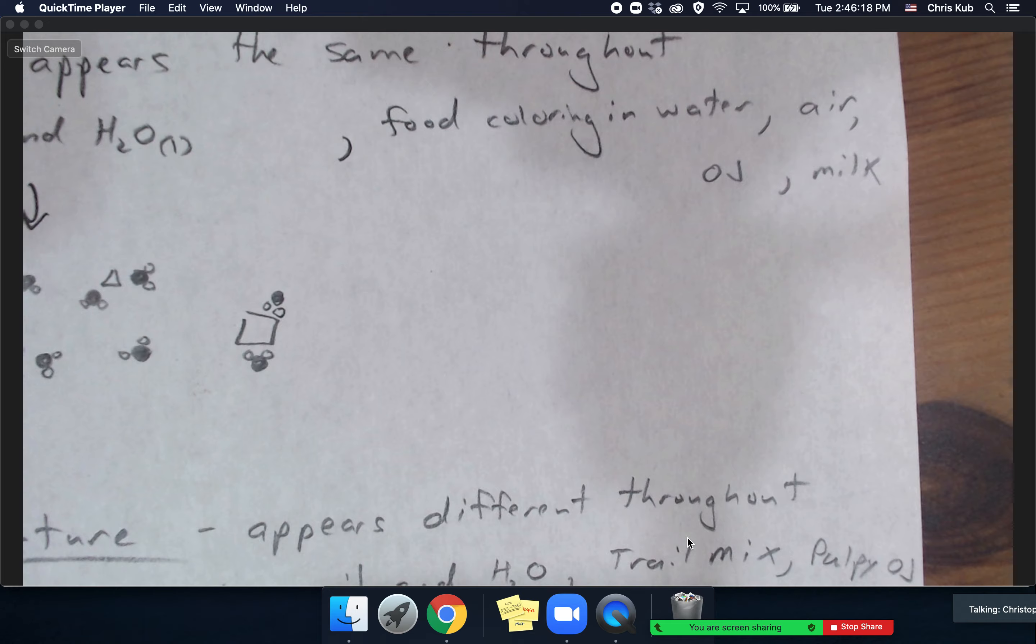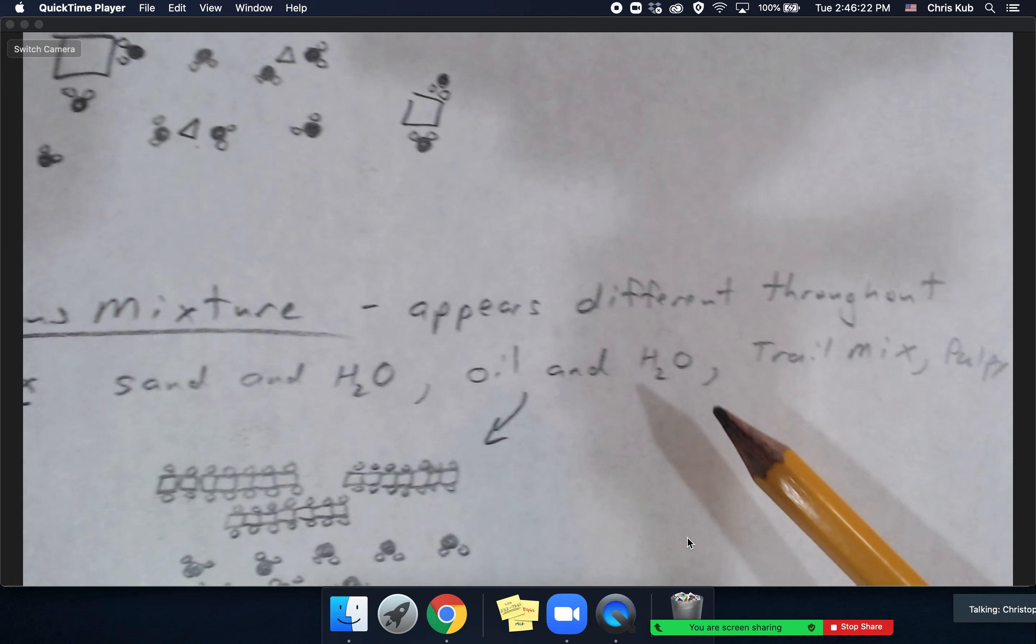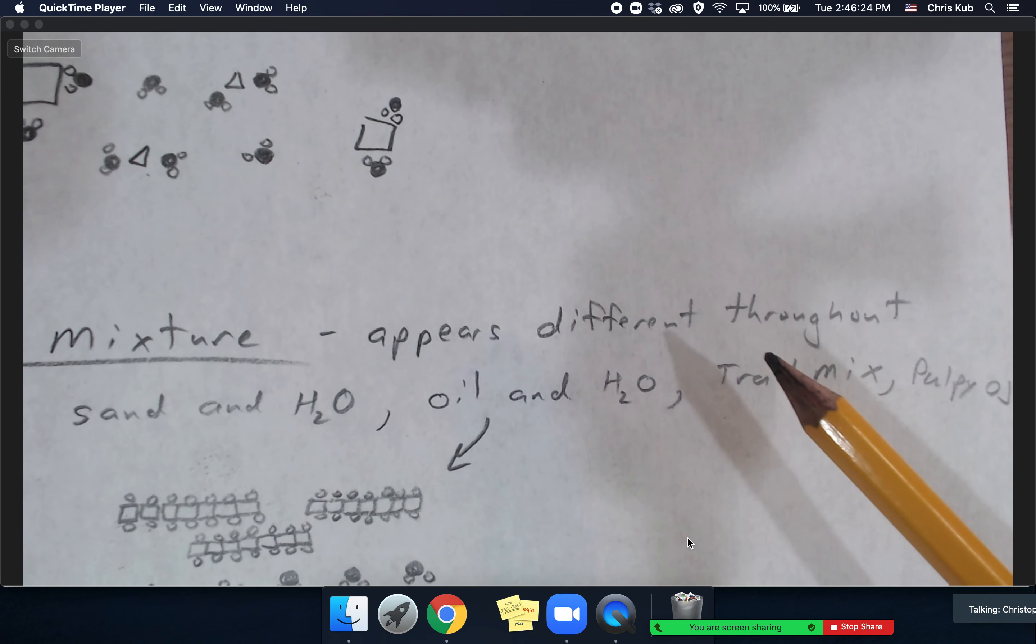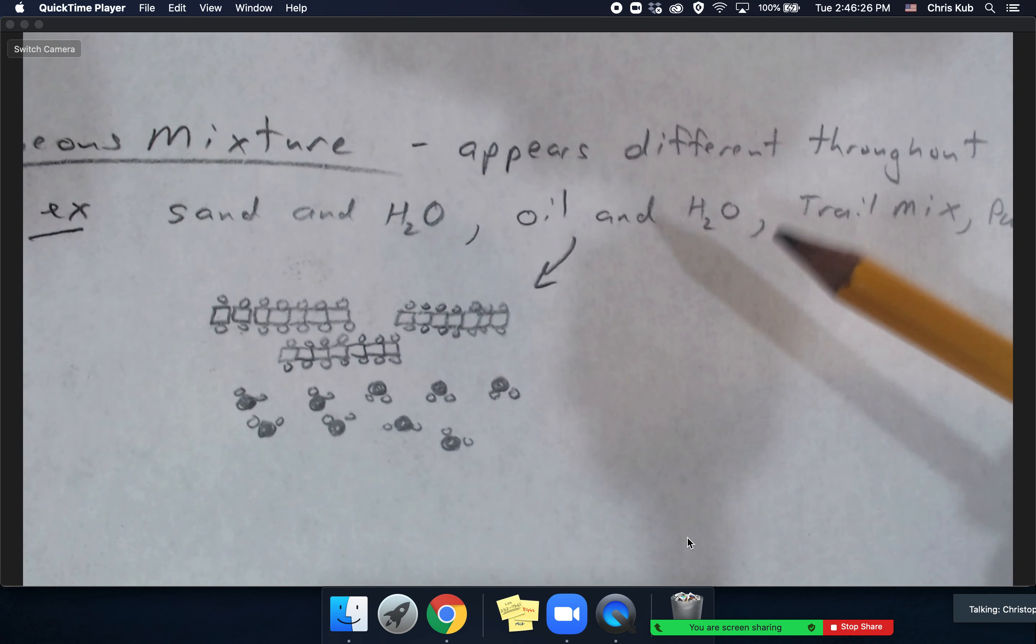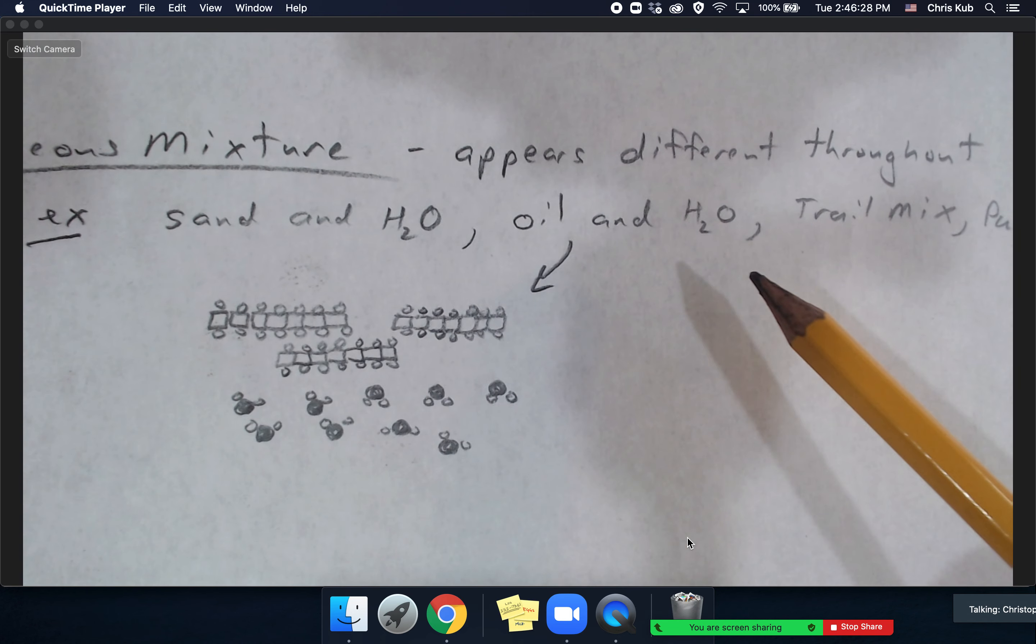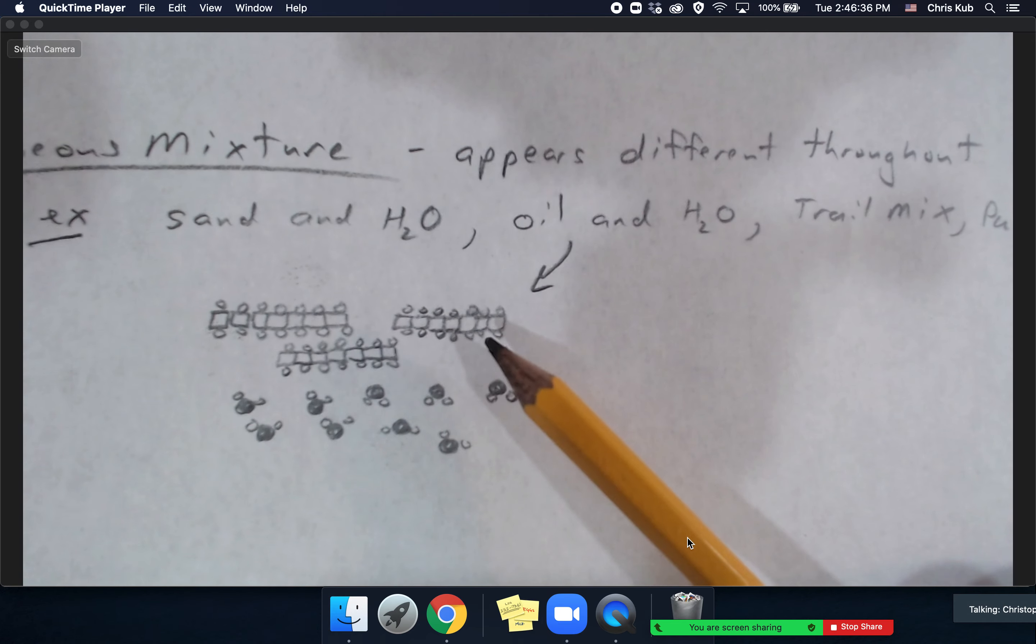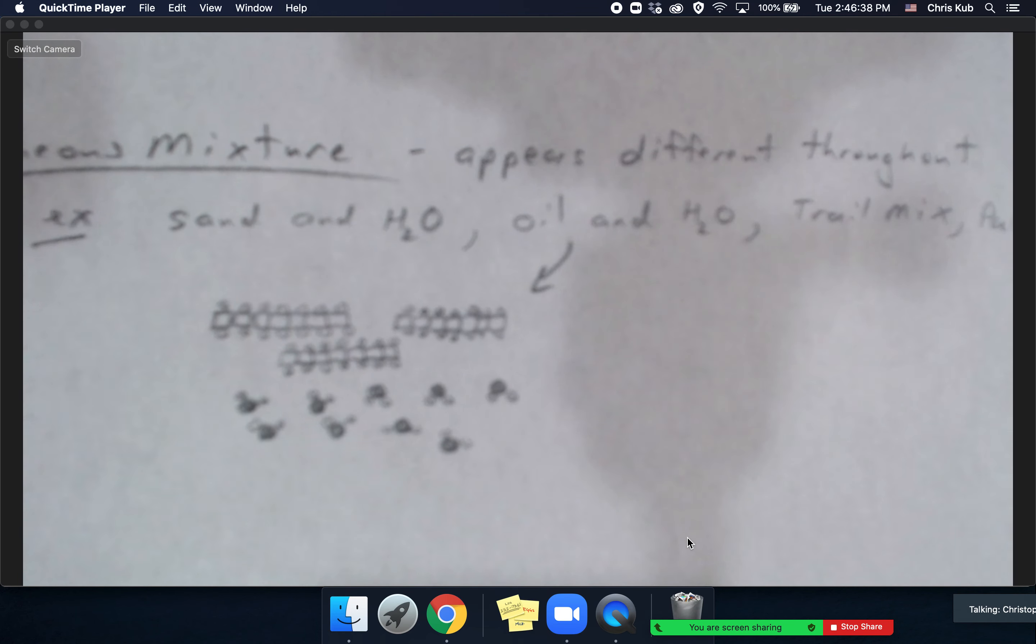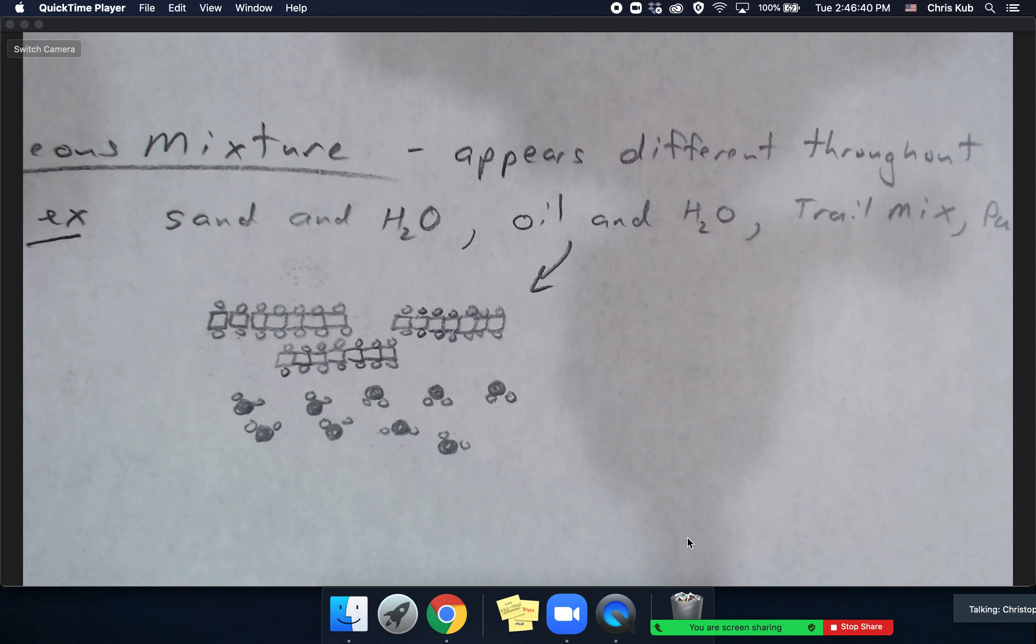And then heterogeneous mixtures - they appear different throughout, they look different throughout. So an example would be oil mixed up with water. Oil and water don't really mix very well, they don't dissolve in each other.